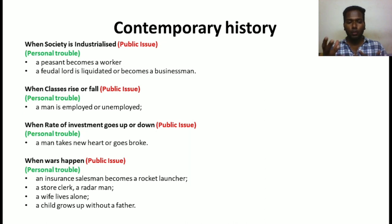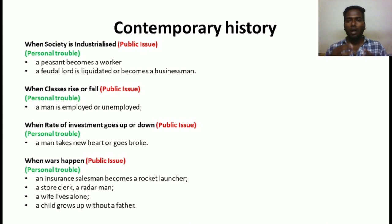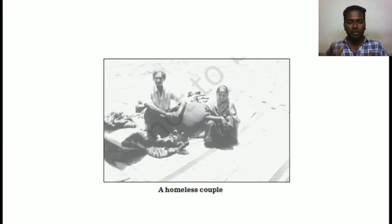Another example of public issues is war. When war happens, personal troubles arise: an insurance salesman becomes a rocket launcher operator, a store clerk becomes a radar man, and they suffer many personal troubles. A wife lives alone after losing her spouse, and a child grows up without a father. Mills connected public issues and personal troubles to show how they interlink with each other.